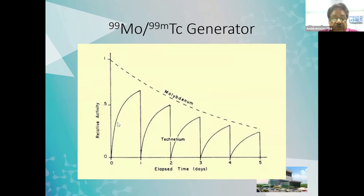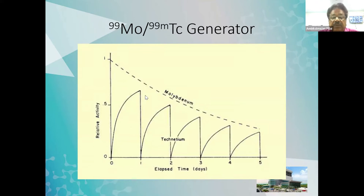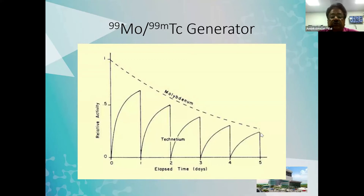Then the activity will start growing and come to about 650 to 700 millicuries on the first day. Then we remove the pertechnetate from it, and it will come back to zero. Again it will grow on the second day, but the overall activity will reduce. Then we do a second elution on the second day, then elute on the third, fourth, and fifth days. If we do not elute, the technetium will also decay in the same manner.